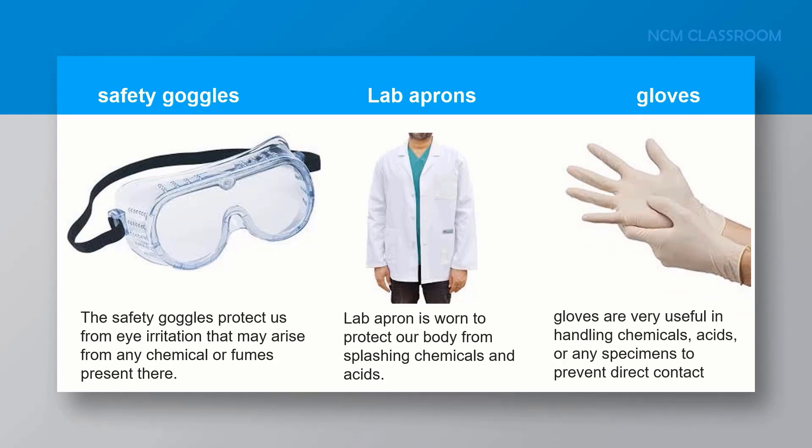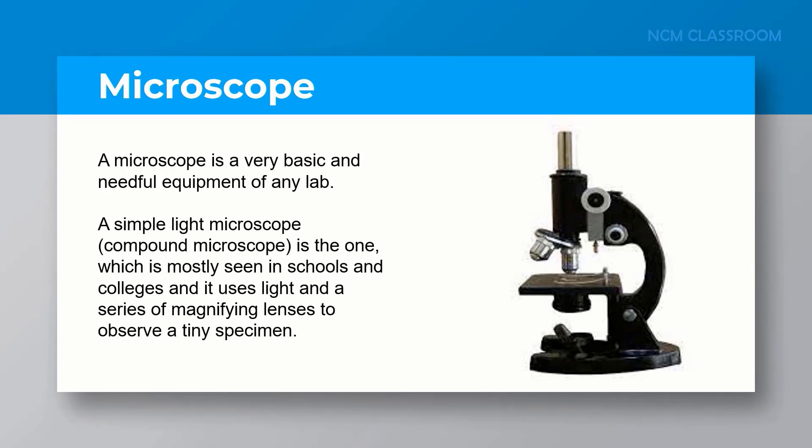The microscope is a very basic and needful equipment of any lab. A simple light microscope called a compound microscope is the one which is mostly seen in schools and colleges, and it uses light and a series of magnifying lenses to observe a tiny specimen.